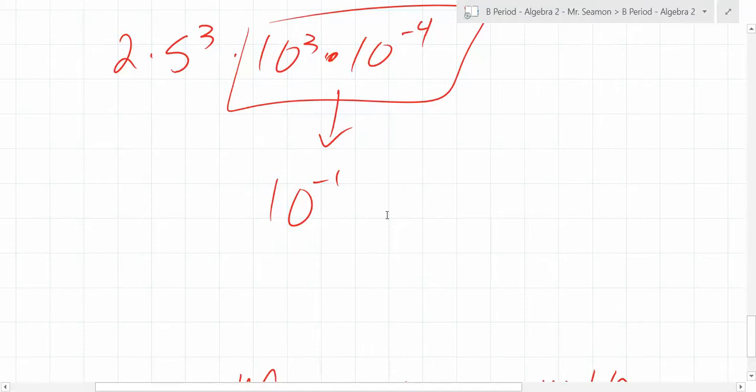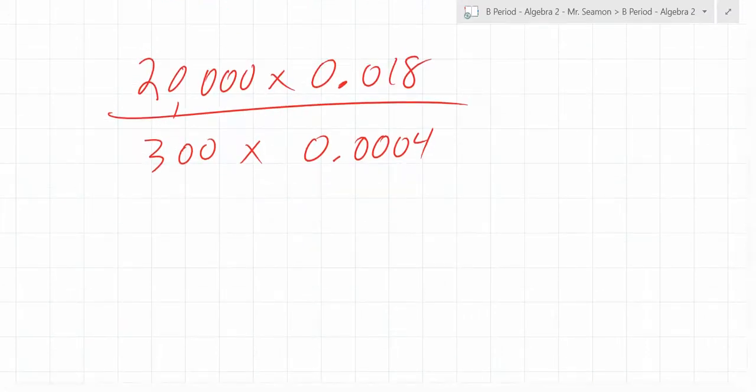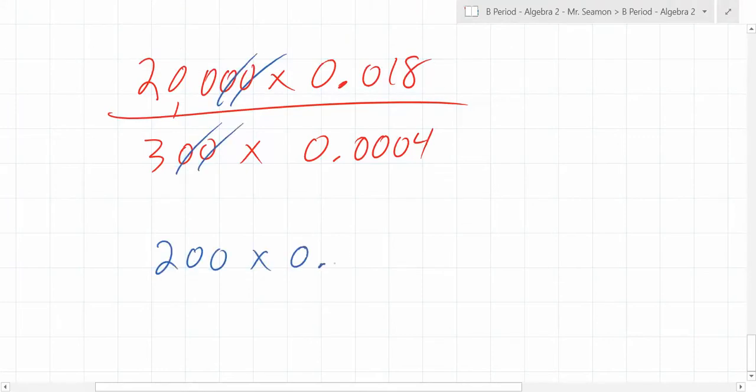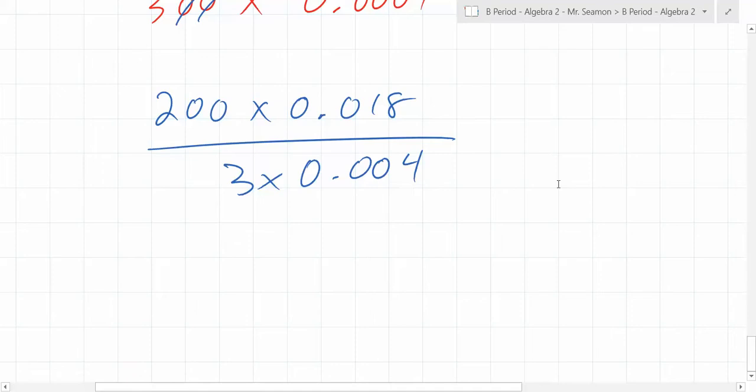So you multiply the constants, which are all constants, but then the powers you take care of separately. Can someone give me some things I could immediately cancel? A lot of zeros can immediately cancel. This cancels with that. That cancels with that. So what are we now left with? 200 times 0.018 over 3 times 0.004.